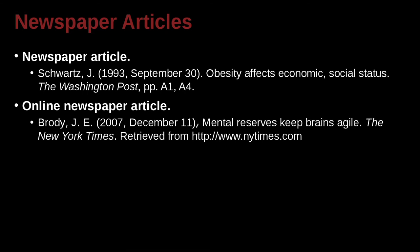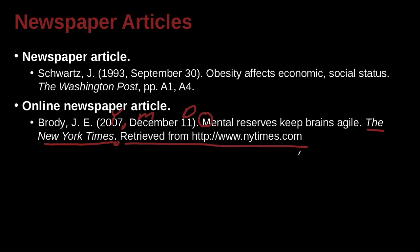How about an online newspaper? Again, very similar. We've got the name, the year, month, and day with a comma. Then here we've got a capital letter to start — this is the name of the article. Then here is the name of the newspaper, and that's the end. But then we add 'Retrieved from,' and that's the website URL.